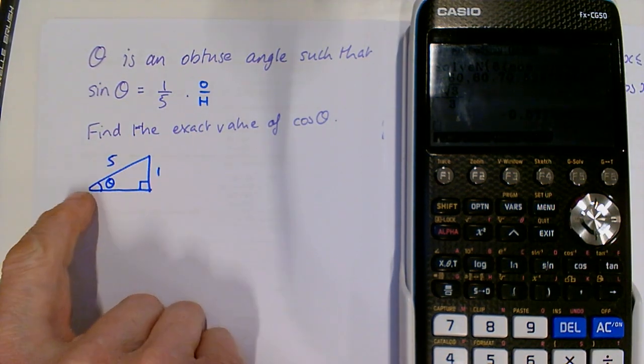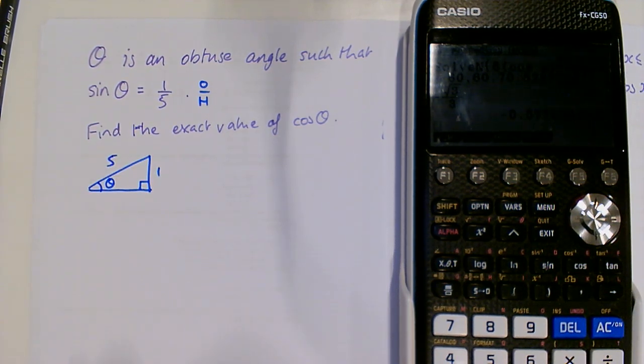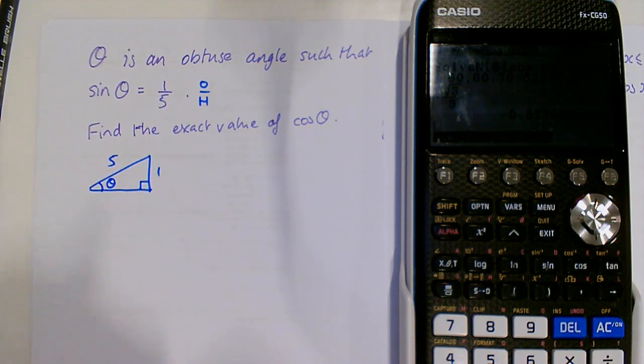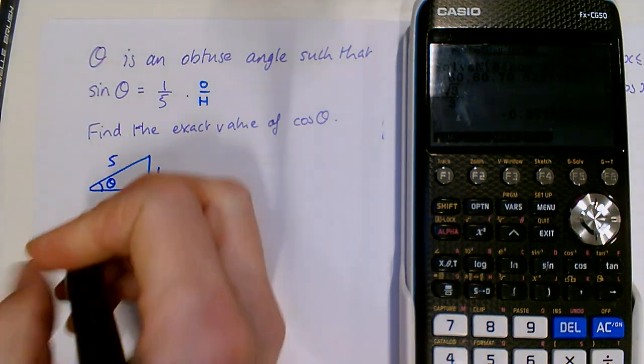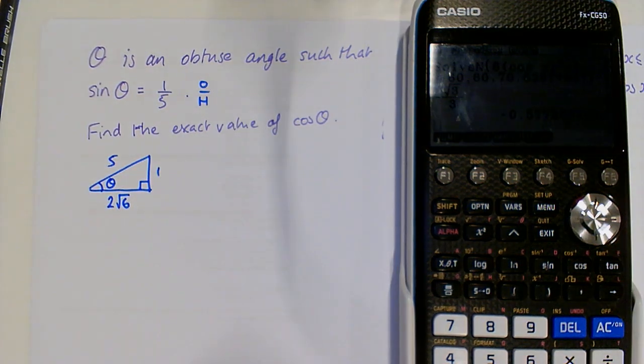And we know that sine is opposite over hypotenuse, so we can write in one over five. We can now use our favorite formula, Pythagoras' theorem, to work out the missing side. So this is going to be 25 take away 1 and square rooted. So that will be root 24, which is 2 root 6.